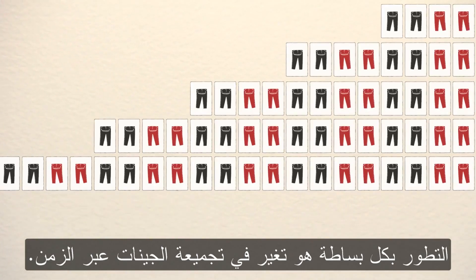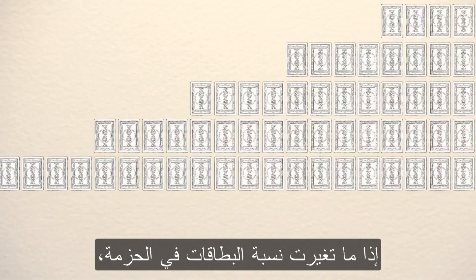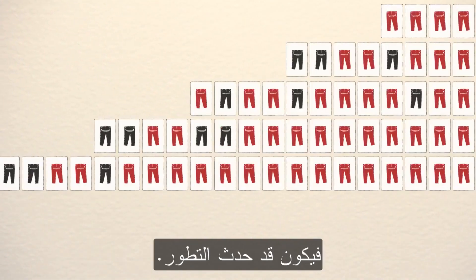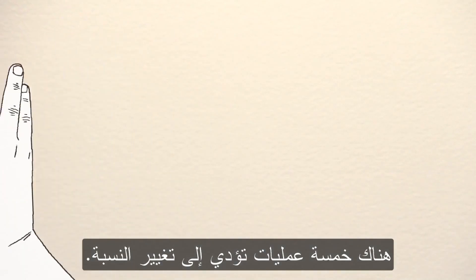Even though the population may grow in size over time, the frequency should stay at about 50%. If this frequency ever varies, then evolution has occurred. Evolution is simply change in the gene pool over time. There are five processes that can cause the frequency to change.